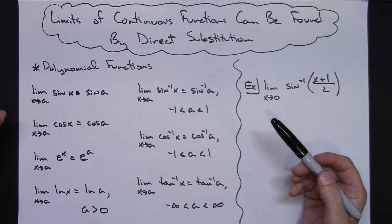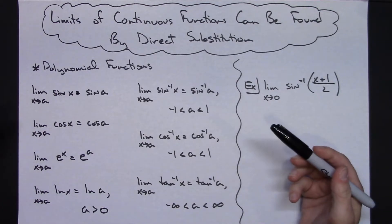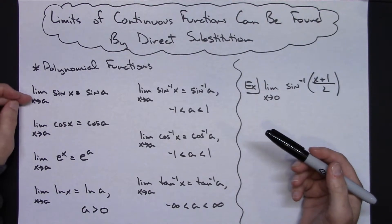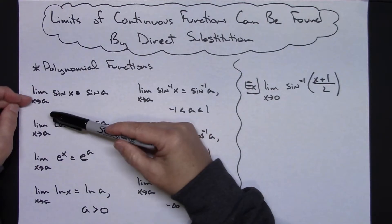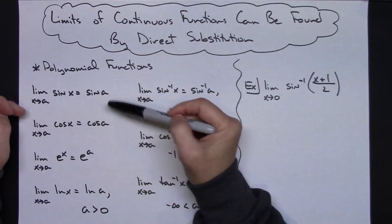If you stop and think about all of your other different types of functions, there are several other functions that are continuous. Our sine function is continuous, so you can take the limit of the sine function by doing a simple direct substitution.